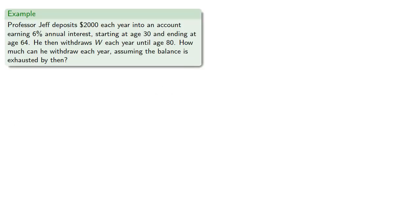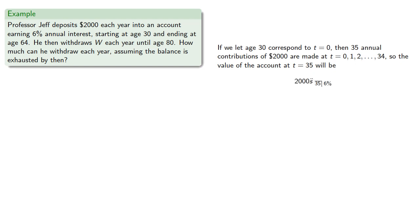For example, Professor Jeff deposits $2000 each year into an account earning 6% annual interest starting at age 30 and ending at age 64. He then withdraws w each year until age 80. How much can he withdraw each year assuming the balance is exhausted by then? If we let age 30 correspond to t equals 0, then 35 annual contributions of $2000 are made at t equals 0, 1, 2, and so on. So the value of the account at t equals 35 will be 2000 s double dot angle 35 at 6%.